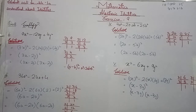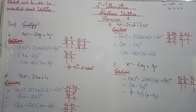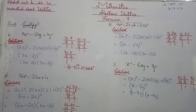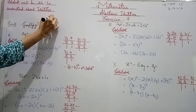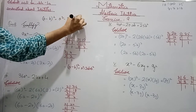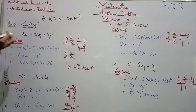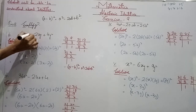The first question is 9x² minus 12xy plus 4y². In the previous question we discussed the identity for addition. Now we will discuss the identity for subtraction: (a minus b)², which is equal to a² minus 2ab plus b². This is the identity we will apply to these expressions.